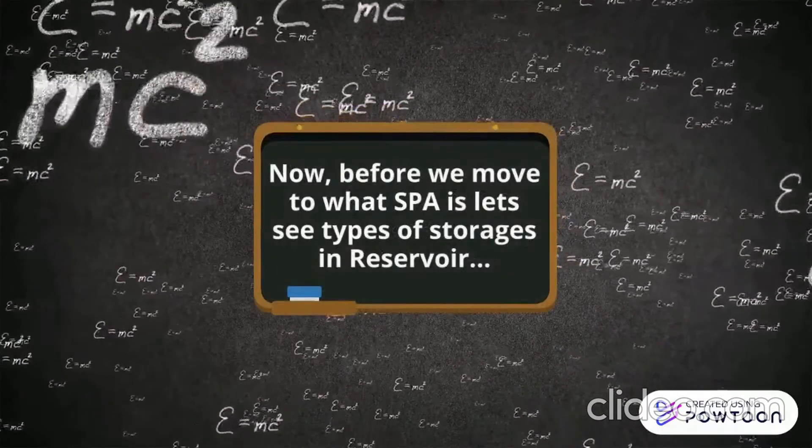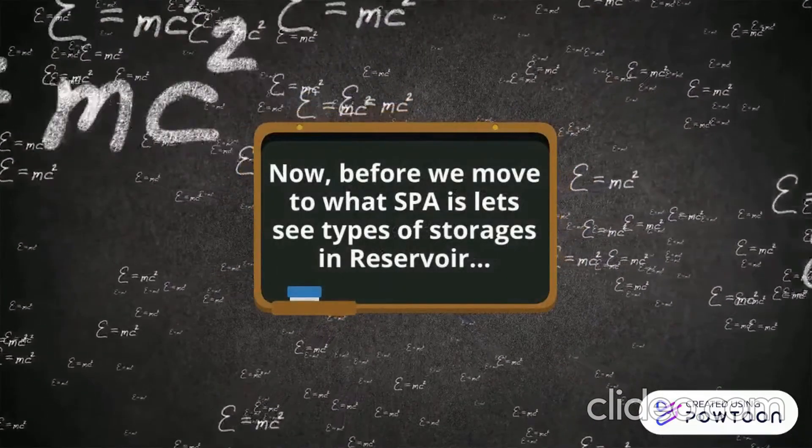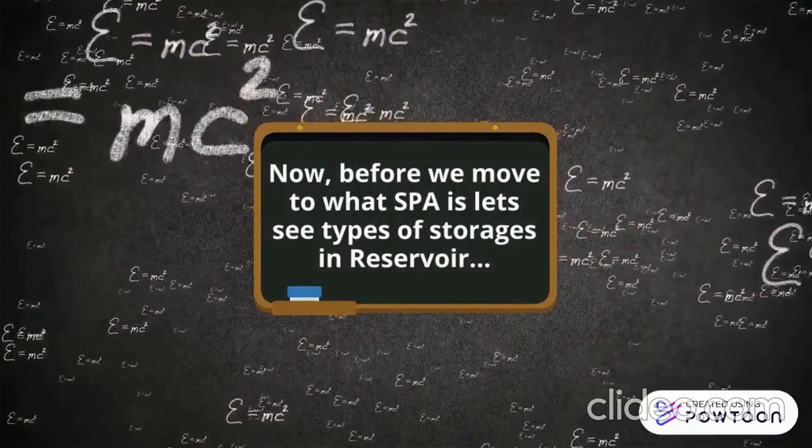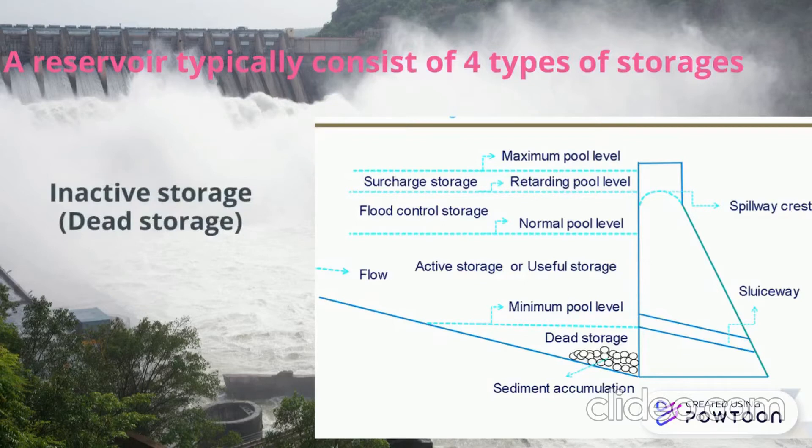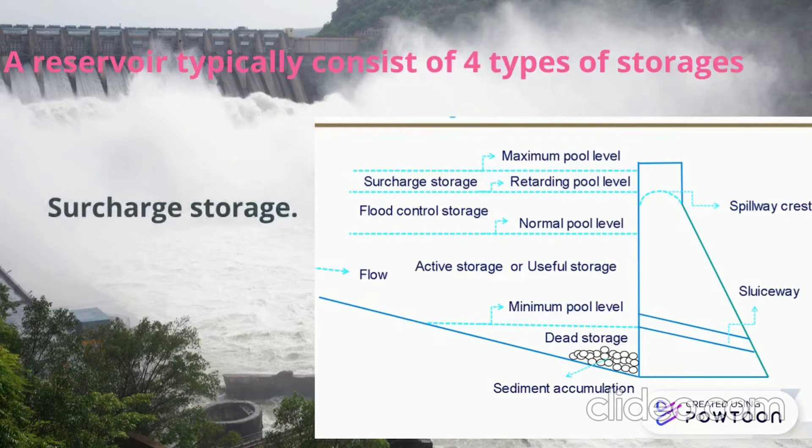Before we get into Sequent Peak Algorithm, let's discuss the types of storages in a reservoir. A reservoir storage consists of dead storage, which is also called inactive storage, then second is flood control storage, third, surcharge storage, and the last is active storage, which is a useful one.